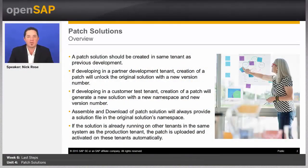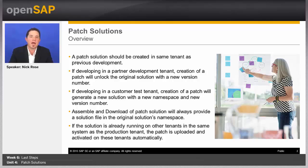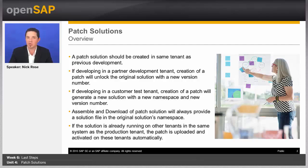We've already created our content, developed our solution, and deployed it to another system. Now, what if we decide we want to develop more content there, or we might have a bug to fix or some other change needed? We talked in the last unit about how once you deploy your solution — specifically the assemble and download step — the solution is locked and you can't make any other changes. So how do we unlock it and allow for more changes? That's where patch solutions come in.